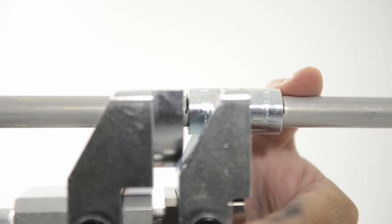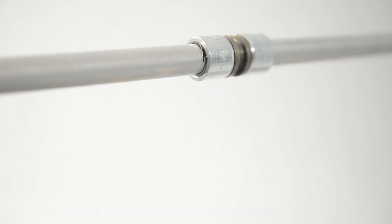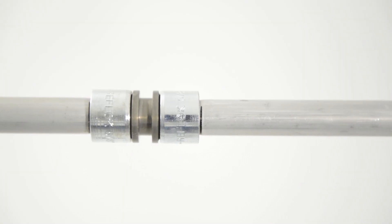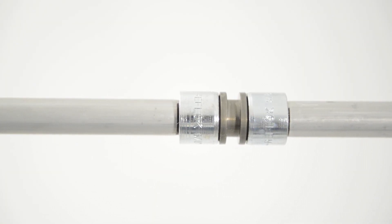Remove the tool from the fitting and repeat as required using the same process. That's how easy it is to form a leak-free, high-pressure Reflok joint.